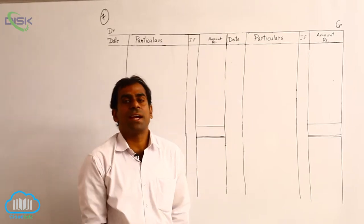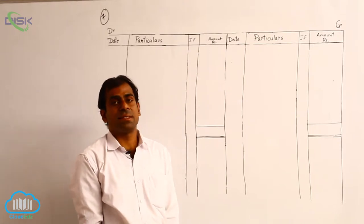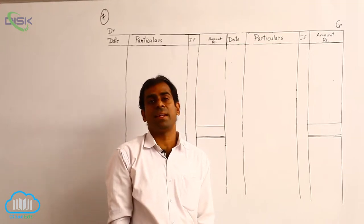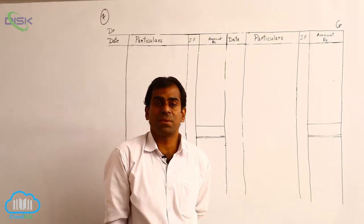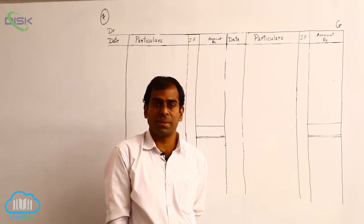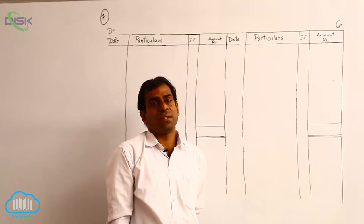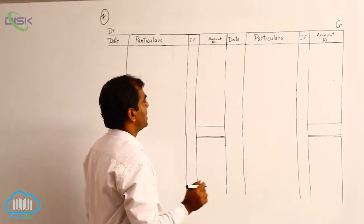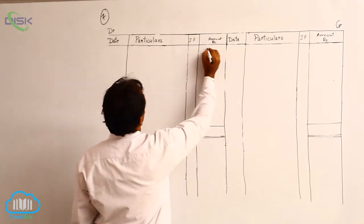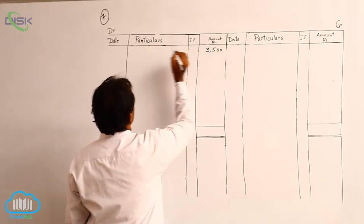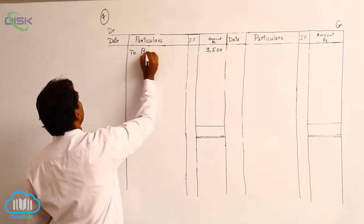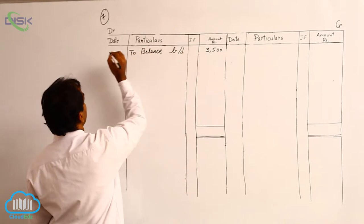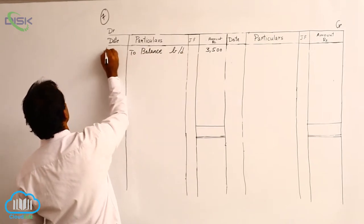The first transaction given is on 7th March — balance due from Praveen. Balance due from Praveen means Praveen has to give money to our business. So when a person has to give money to the business, his account will show a debit balance. On the debit side we write the balance 3500 in the amount column. It is an opening balance, so we write balance brought down, and the date is 7th March.